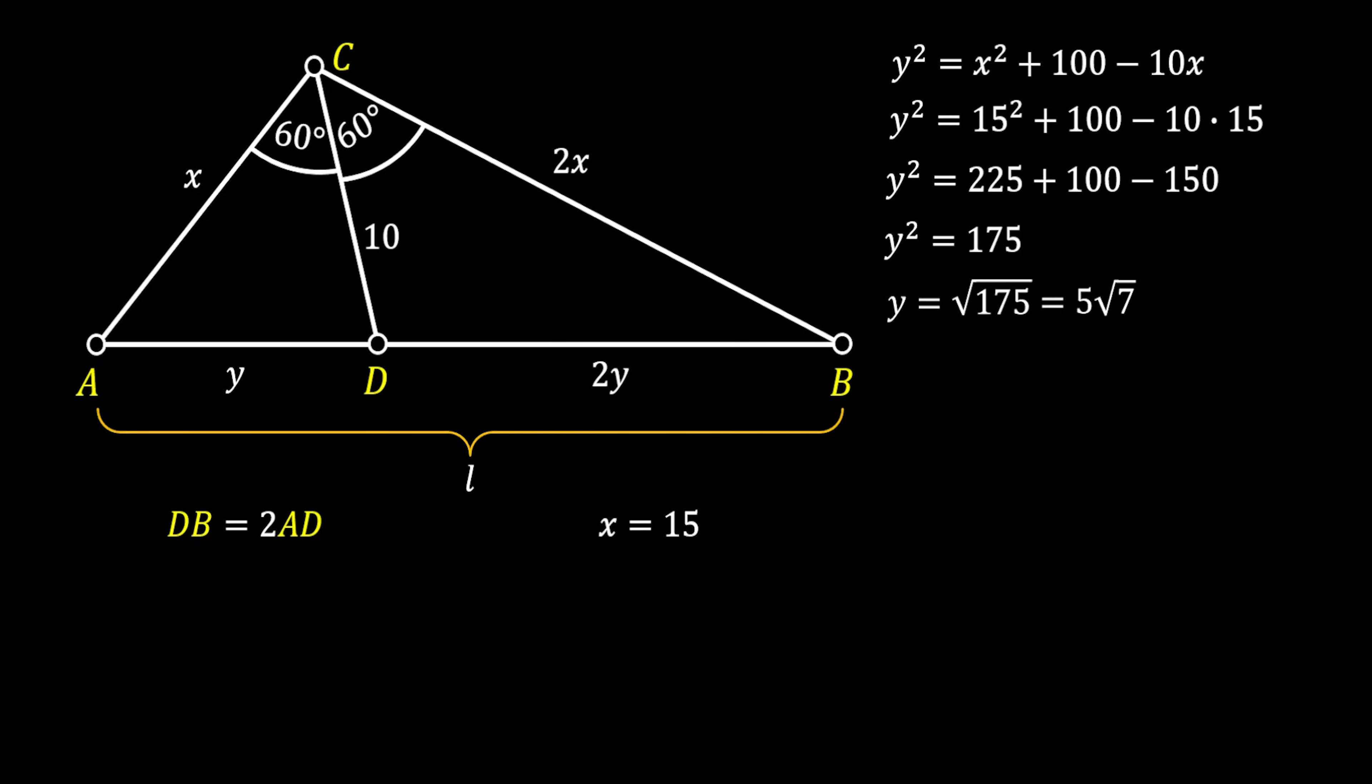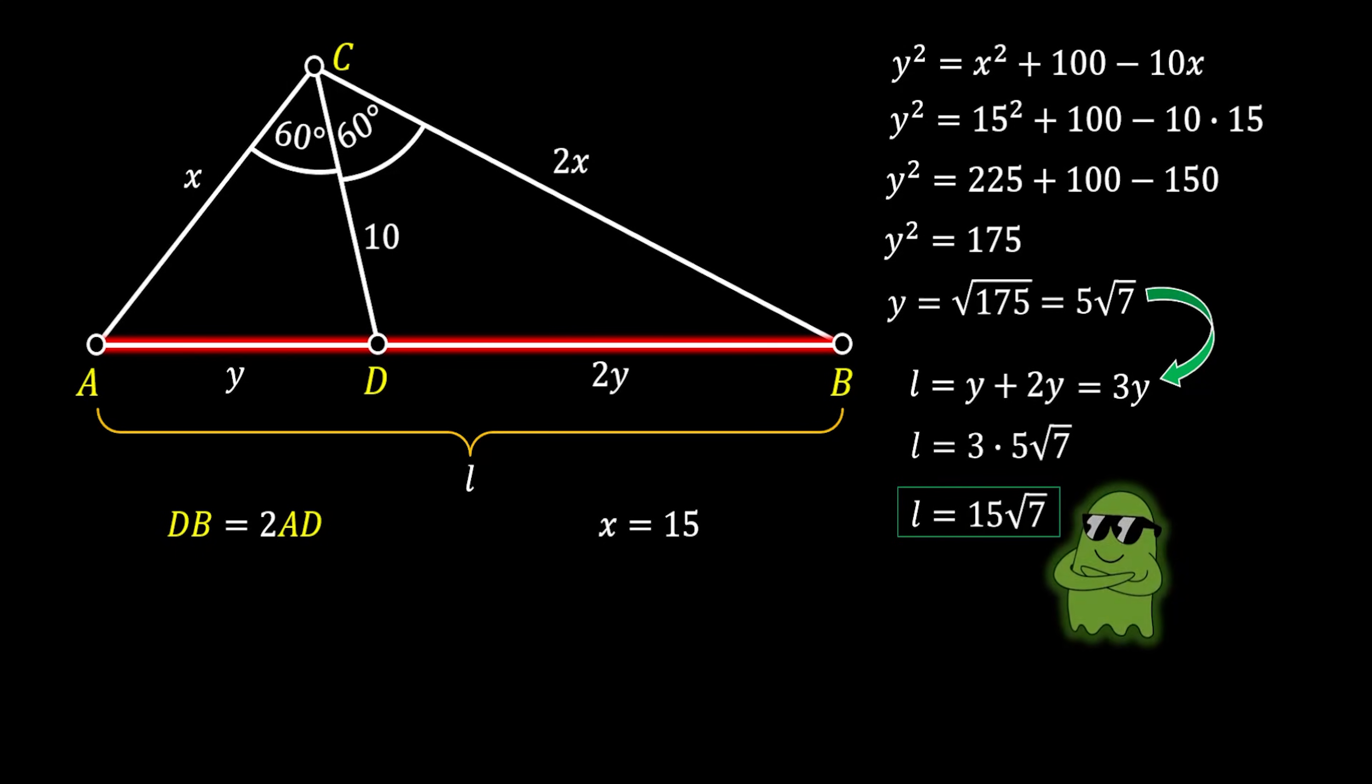Remember, we are looking for the side AB of our triangle. And this side equals to the sum of the segments Y and 2Y, which equals to 3Y. Now, we are just going to substitute the value of Y. And we will get that the length of this side is 3 times 5 root 7, which means that the length of our wanted line is equal to 15 square root of 7 units. And this is our awesome solution.